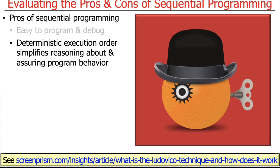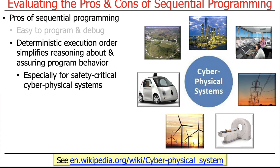Deterministic execution order also simplifies reasoning about program behavior and assuring correctness. It's just easier to reason about things if they occur sequentially. This is particularly true for safety-critical systems that interact with the physical world — the right answer computed too late becomes the wrong answer. You don't want to give someone the wrong dose of radiation, or have a driverless car mistake a stop sign for a tree, or have power grids or air traffic management systems fail. It's a lot easier to validate the behavior of single-threaded programs.